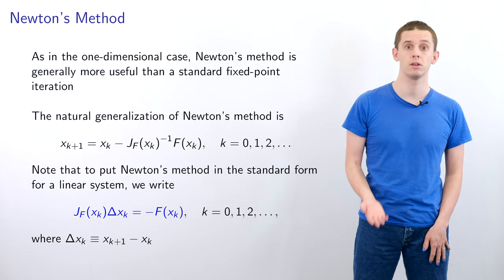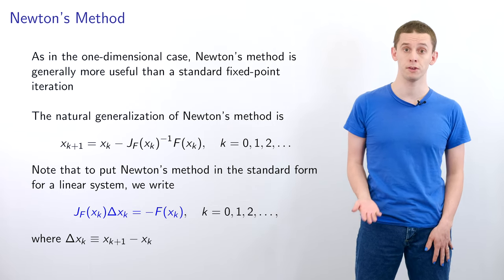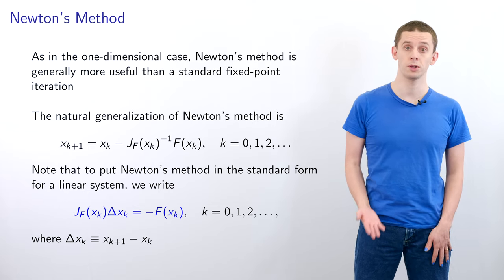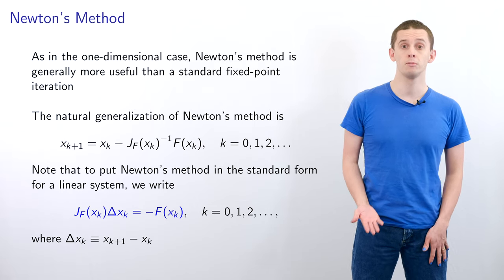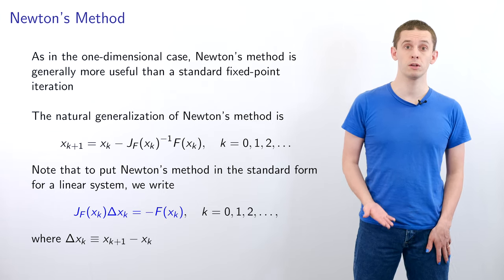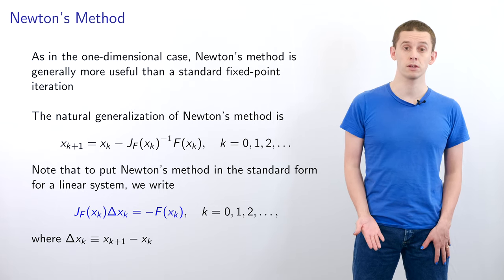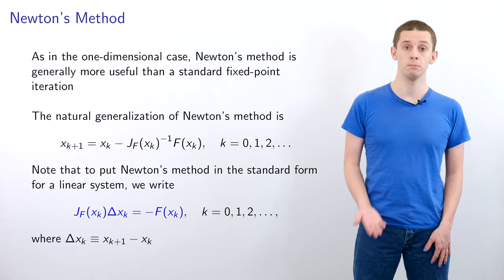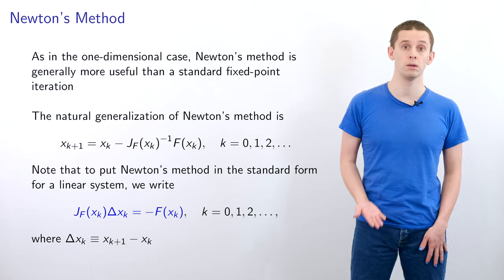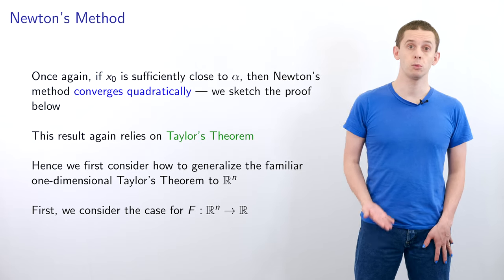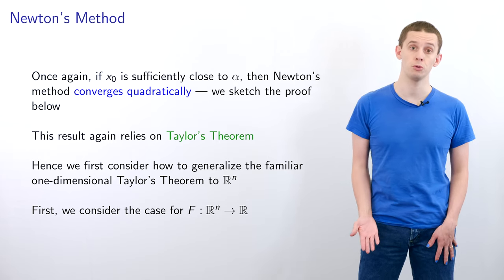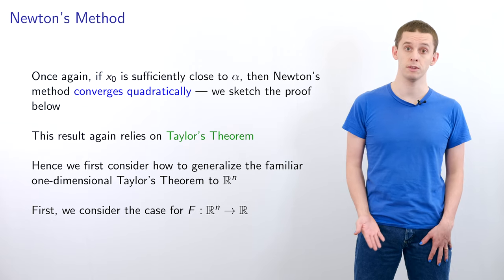As in the one-dimensional case, Newton's method is generally more useful than the standard fixed-point iteration. The natural generalization of Newton's method is x_{k+1} = x_k - J_F(x_k)^{-1} F(x_k). We write this in standard form by solving a sequence of linear systems J_F(x_k) Δx_k = -F(x_k), where Δx_k = x_{k+1} - x_k. If x_0 is sufficiently close to alpha, Newton's method will converge quadratically, and we'll now look at the reason for this.